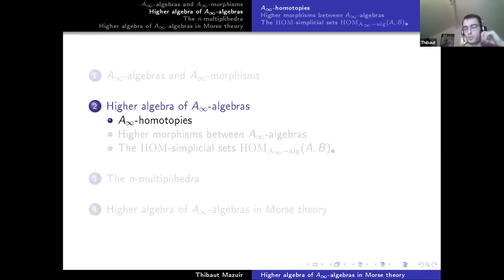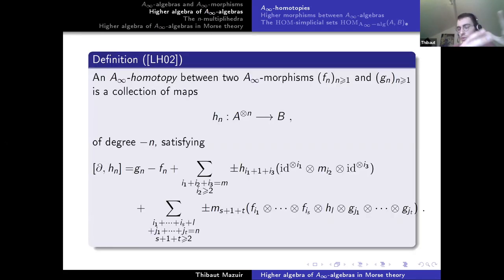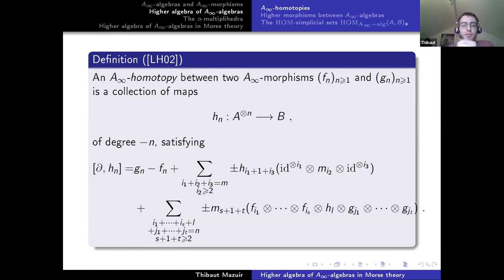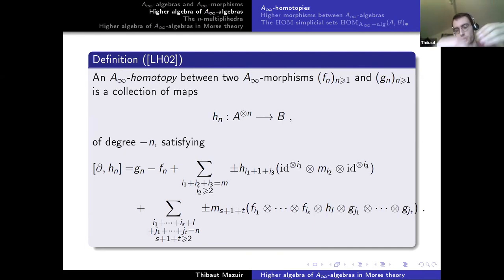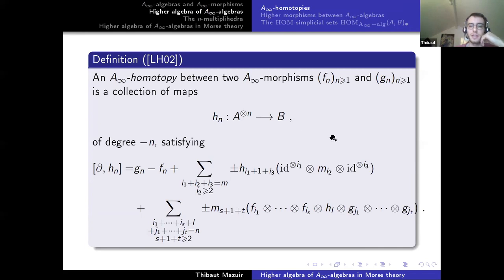For the first part of the problem — A-infinity homotopies — drawing from the PhD thesis of Kenji Lefebvre-Azegawa on the homotopy theory of A-infinity algebras: an A-infinity homotopy between two A-infinity morphisms will be a collection of arity-n maps from A to B, this time having degree minus n. So each time we go down by one degree: multiplications have degree 2 minus n, morphisms 1 minus n, homotopies minus n. These satisfy certain equations.